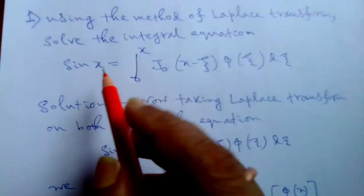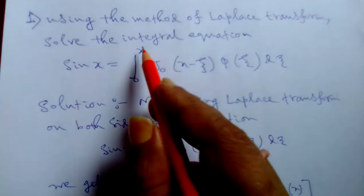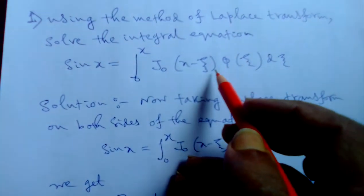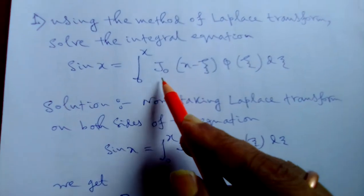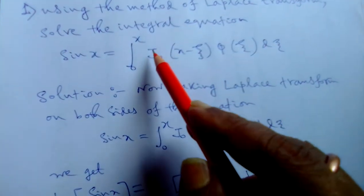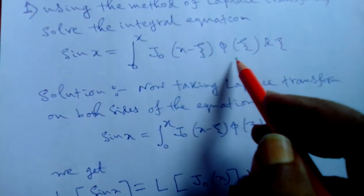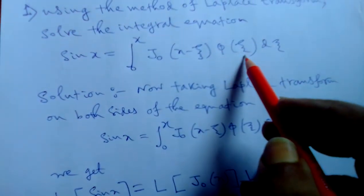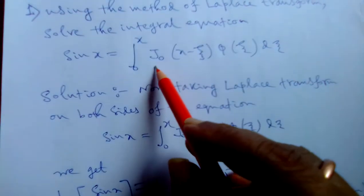Using the method of Laplace transform, solve the integral equation sin x equals integral 0 to x j0(x minus xi) phi(xi) d xi. We do not discuss this notation because this is a part of Bessel function of differential equation, but we are using these tools and watching my earlier videos about this function.